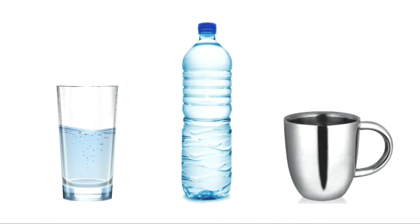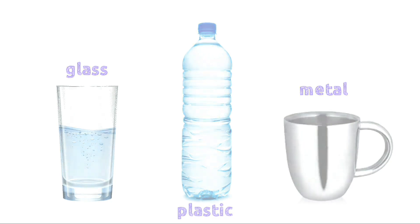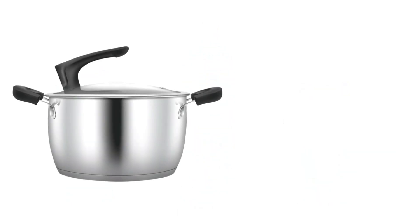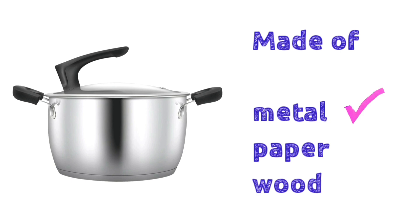To hold liquid we generally use a tumbler made of glass, plastic, or metal. Similarly, our cooking vessels are often made of metals or their alloys. They cannot be made of paper or wood.